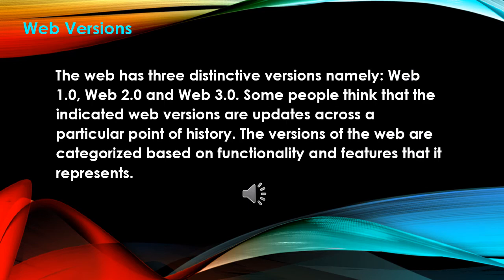Web versions. The Web has three distinctive versions: Web 1.0, Web 2.0, and Web 3.0. Some people think that the indicated Web versions are updates across a particular point of history. The versions of the Web are categorized based on functionality and features that they represent.